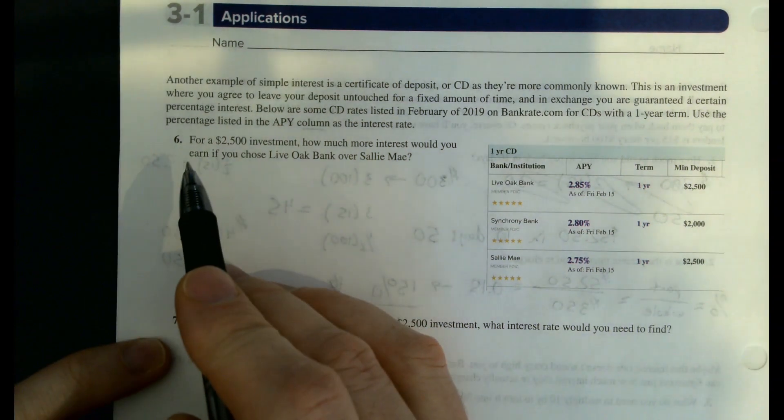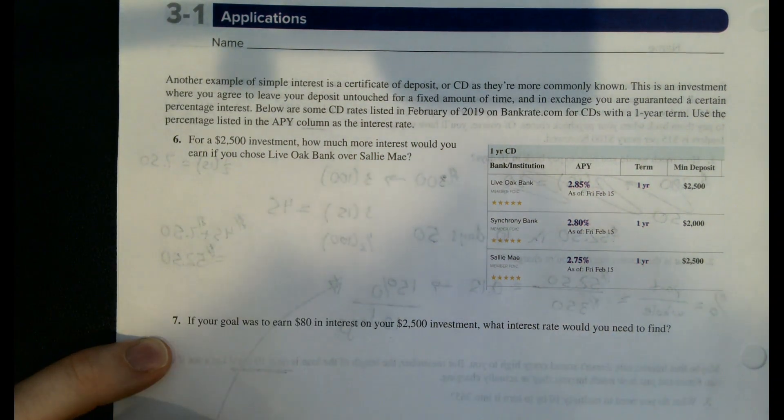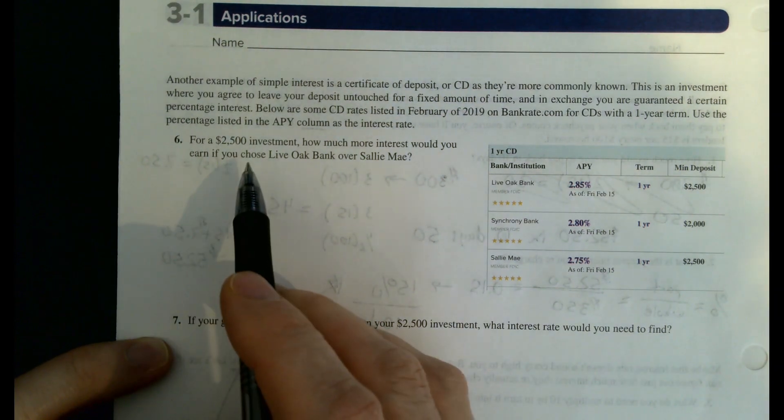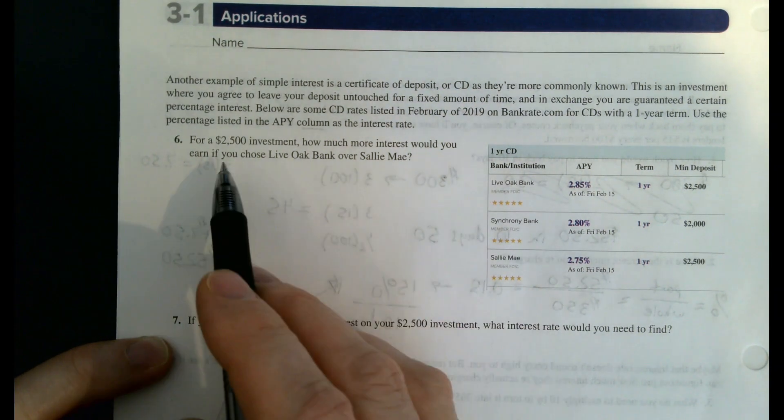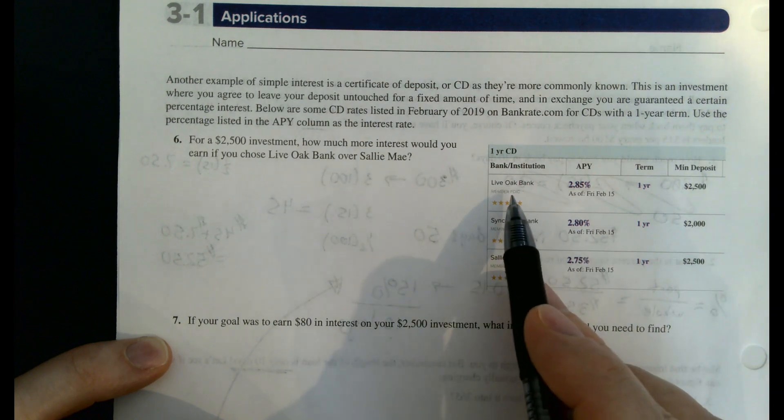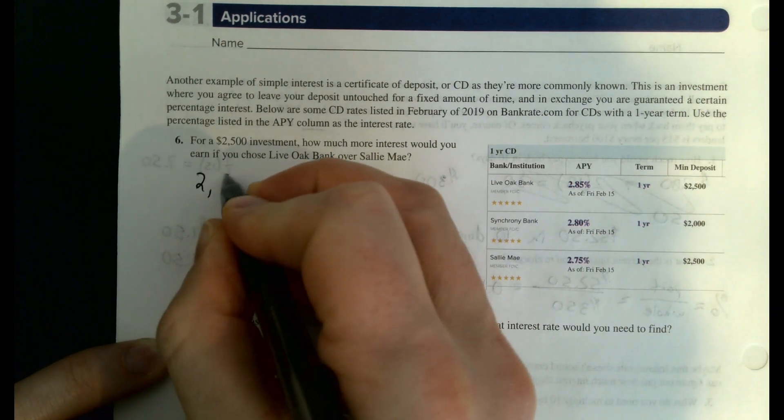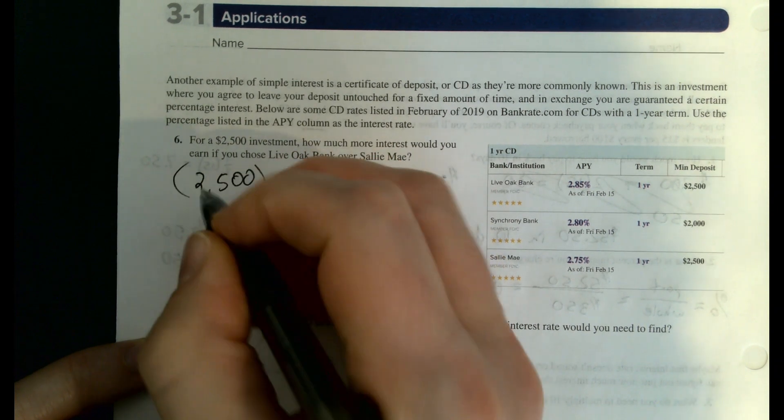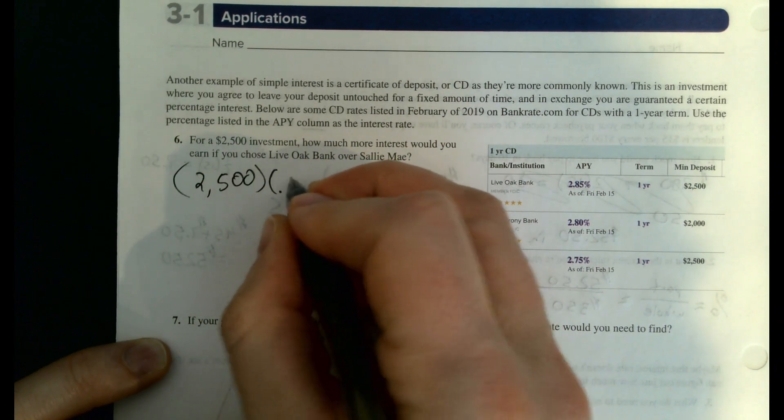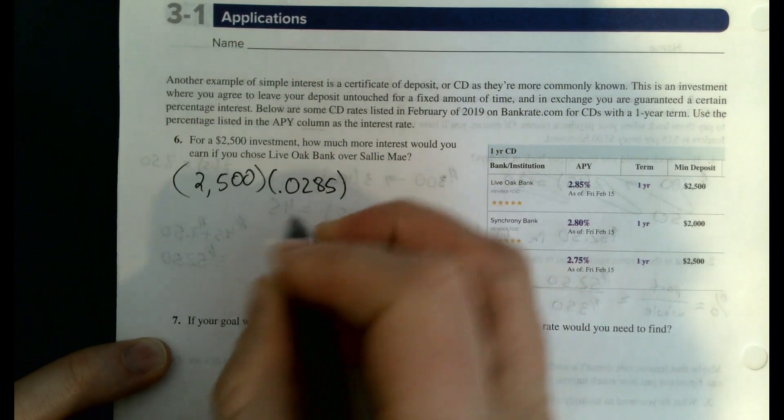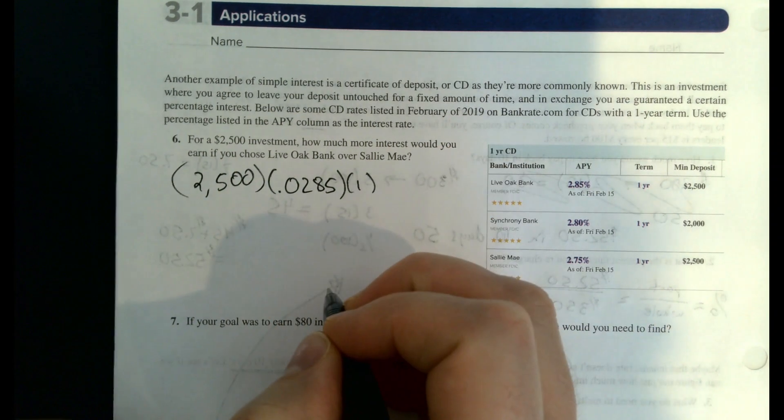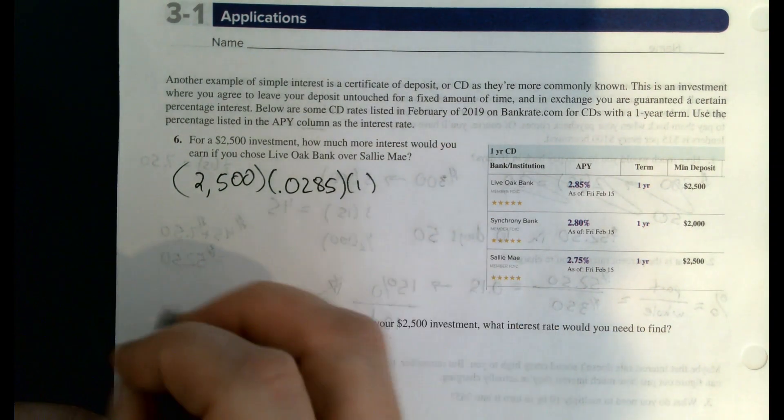Here we're looking at how much more interest would you earn if you chose Live Oak Bank versus Sallie Mae. So we're looking at $2,500 invested for one year. Our interest rate here is 0.0285, we're just going to multiply by one. That's Live Oak. And then the Sallie Mae Bank is 0.0275 for one year.